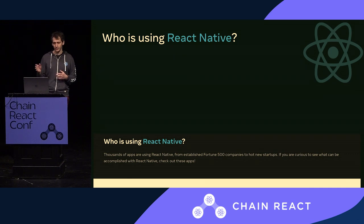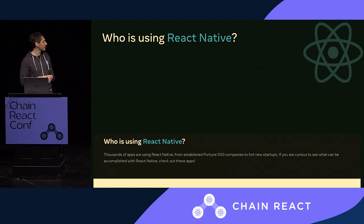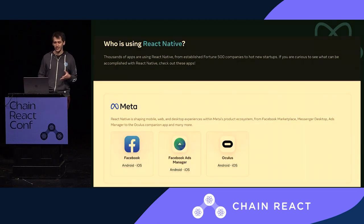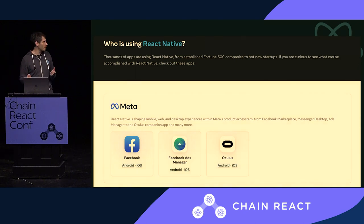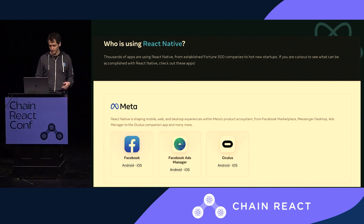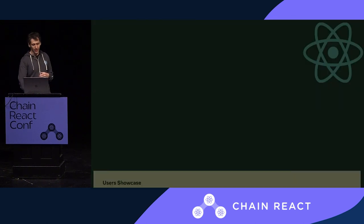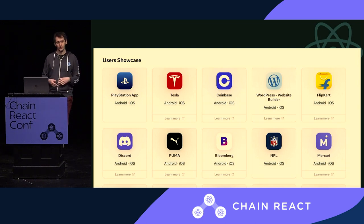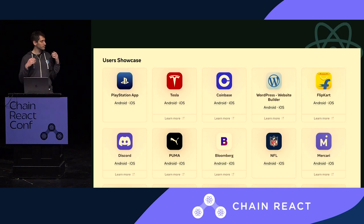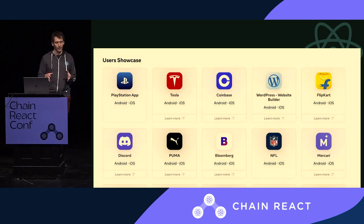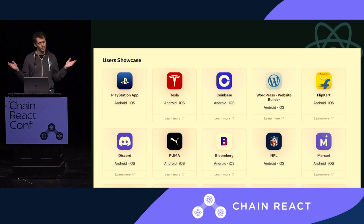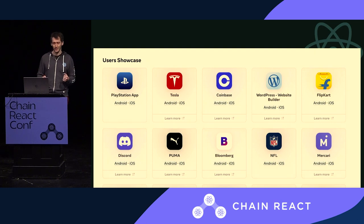On the website, we have a section called the showcase, where we collect a subset of companies and applications using React Native. Starting from the usual suspects, Meta is actually using React Native in the Facebook app and in other apps, like the App Manager or the Oculus apps. Microsoft, as we know from the talks today, uses React Native in the Office Suite and other applications. But React Native is not used only by big companies — there are a plethora of smaller companies using it too, and there are tens of thousands of other apps in the stores.